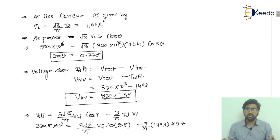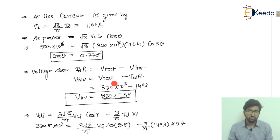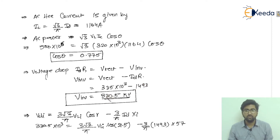Now we find the voltage drop between inverter and rectifier. V_inverter = V_rectifier − ID × R_line. The rectifier side voltage is 335×10³ V (335 kV) as given as load voltage. After simplification, the inverter side voltage VDI = 330.5 kV.